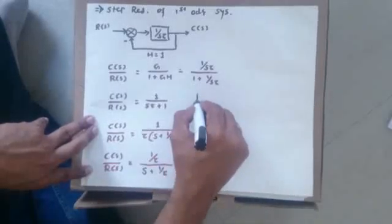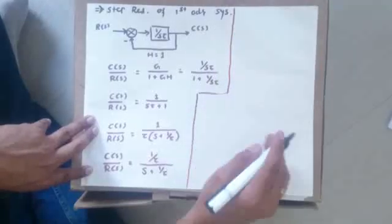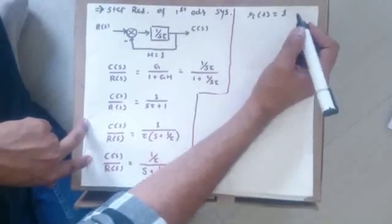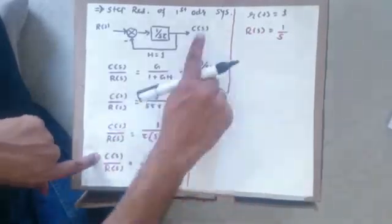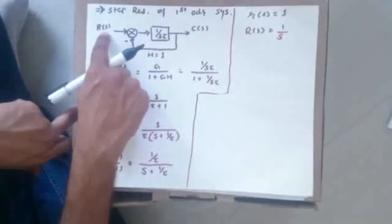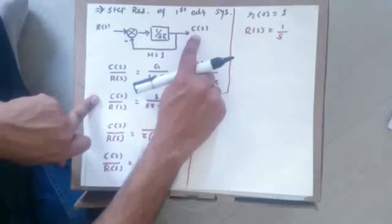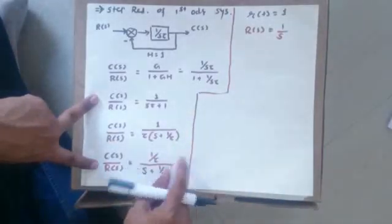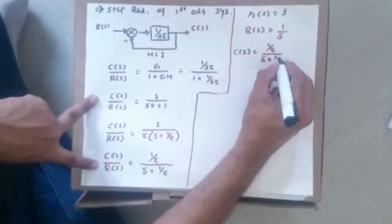Now, the question is the step response of a first order system. Step response means the input r(t) is equal to 1, so R(s) is given as 1/s. I want to find the output — I want to find the step response. We are learning time response: when a step function is given, how the output varies with time. So instead of R(s), I put 1/s, and I get C(s) equal to (1/tau) divided by s·(s plus 1/tau).